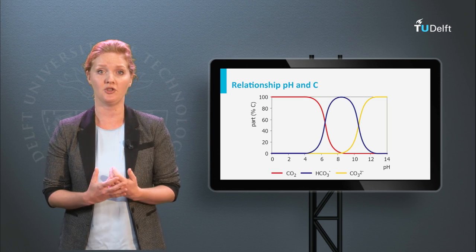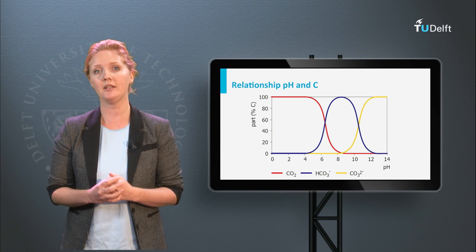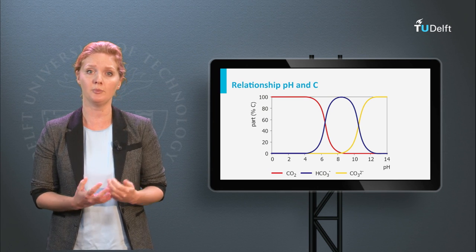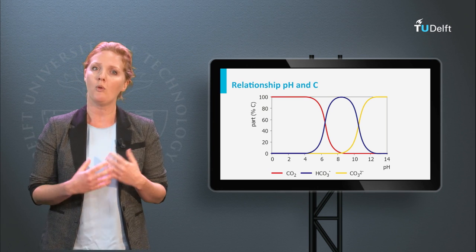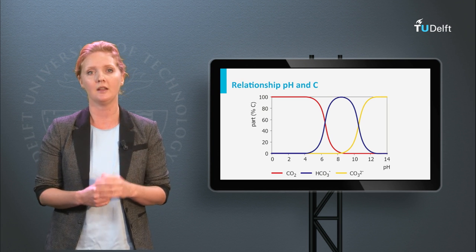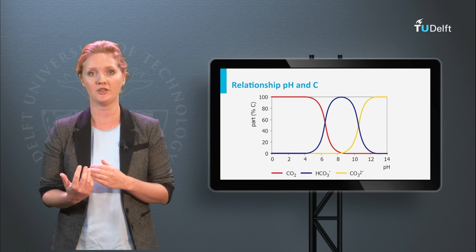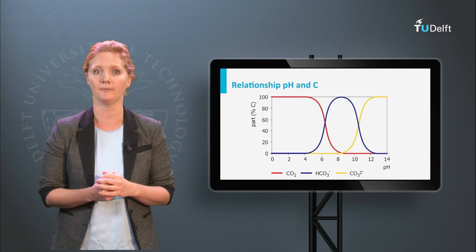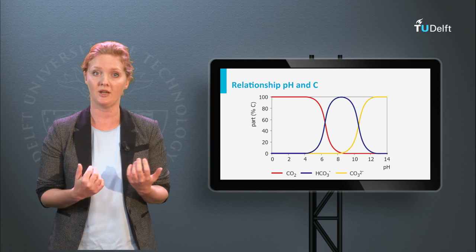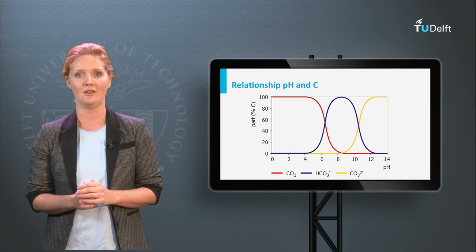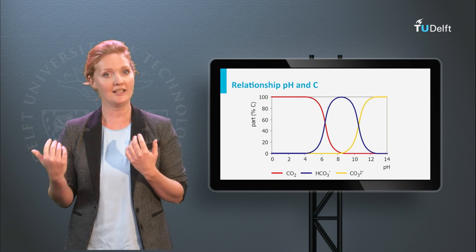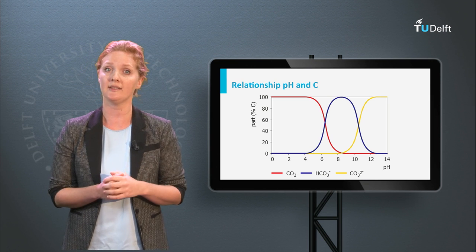This graph shows the relationship between pH and different CO₂-related species. In the low pH ranges, carbon dioxide contributes 100% to the carbon in the water, while in the higher pH ranges 100% consists of carbonate. Around neutral pH, a combination of carbon dioxide and bicarbonate is present in the water. The exact amount of carbonic acid or bicarbonate can be determined with titration methods. This must have given you a quick introduction to acid-base reactions in water, which we will return to later in the lectures about aeration and softening.